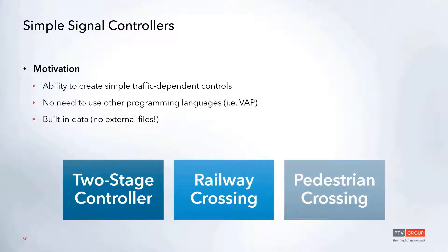As part of this, there were three different controller options that were added: the two-stage controller, a railway crossing, and a pedestrian crossing.